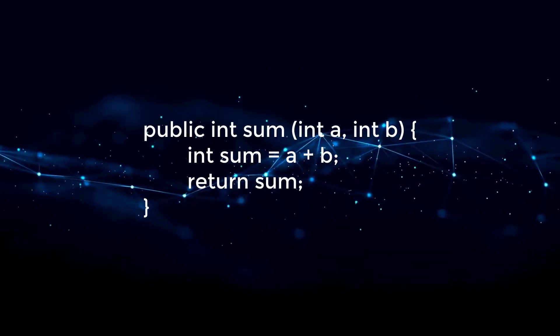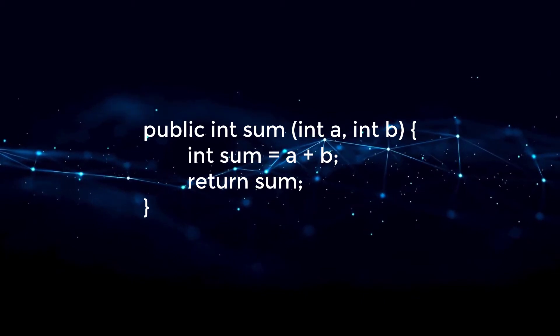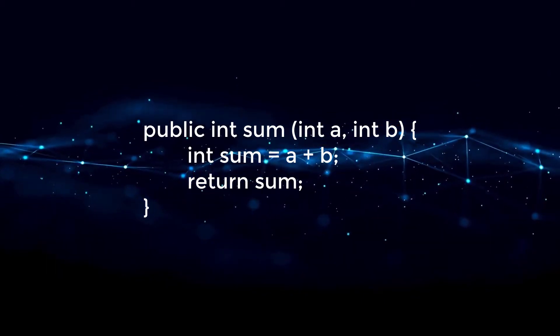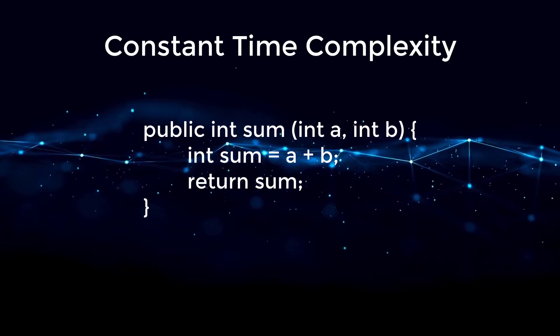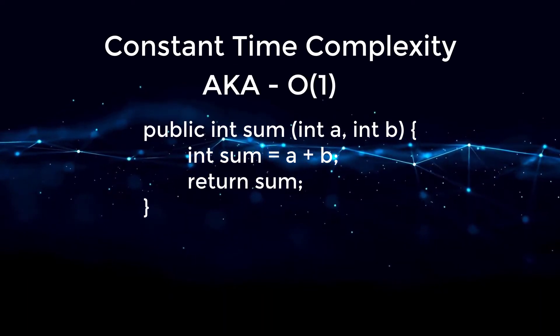So let's start off with a very simple example. Let's say we had the following function. In this example, we are achieving what's known as a constant time complexity, which is known as Big O of one.